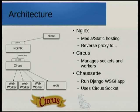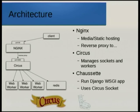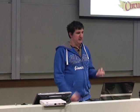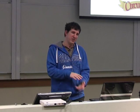Circus manages sockets and workers. You define open sockets and it listens on them. When it receives a connection, it passes the socket to a web worker. It monitors the workers — you can increase the number of workers and it will spin up another one. If one crashes, it will restart it. So it does process management similar to supervisord.